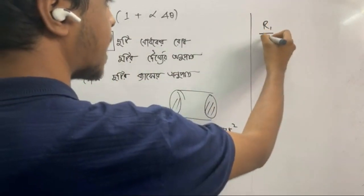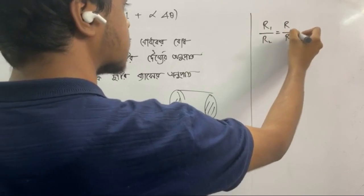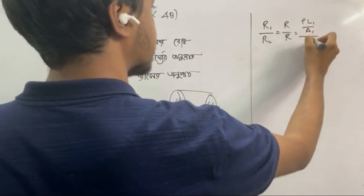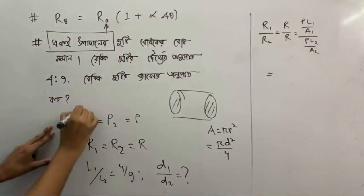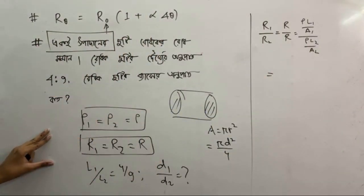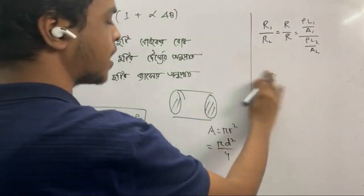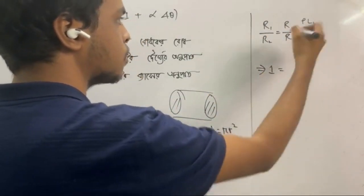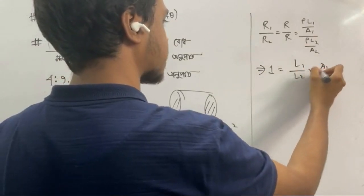R1 by R2 equals ρ·L1/A1 divided by ρ·L2/A2. Since ρ is the same material, rho is same — look, rho is the same, so rho cancels out. After cancellation, R1/R2 equals L1/L2 into A2/A1.